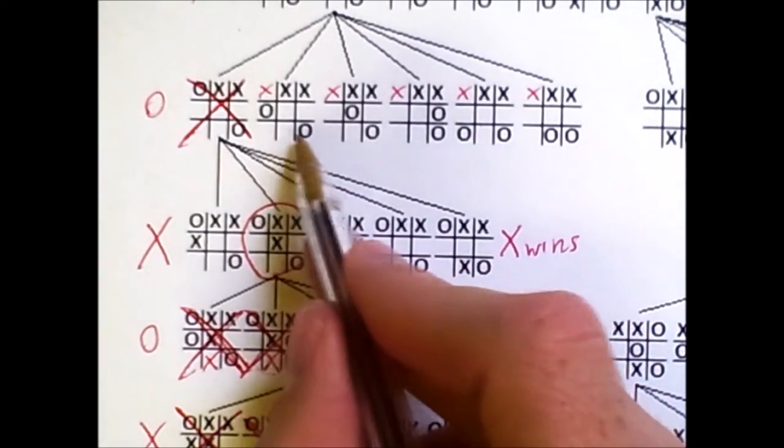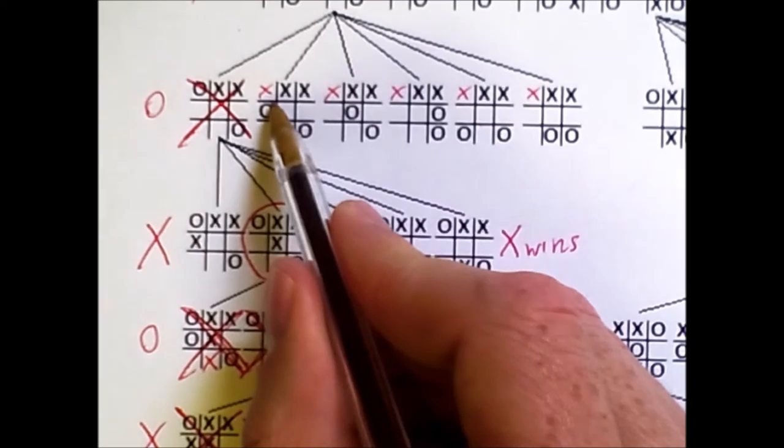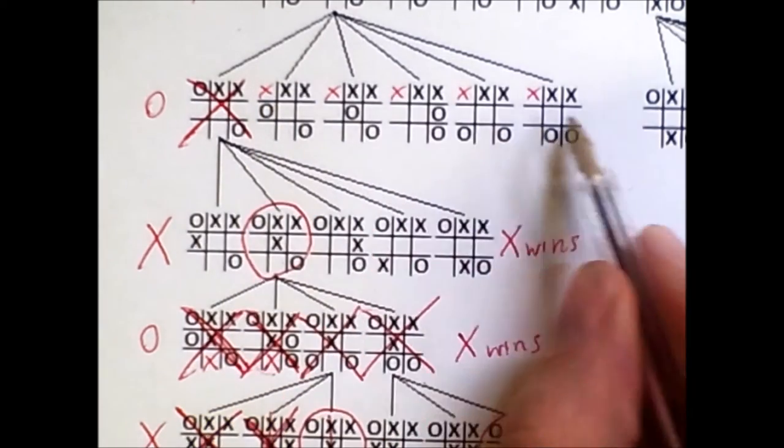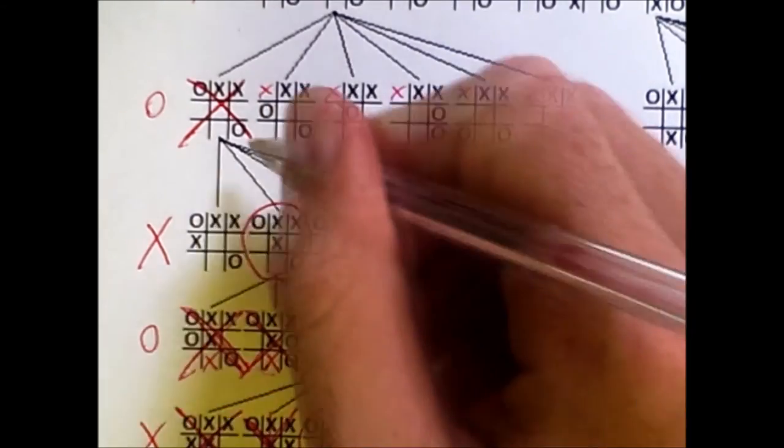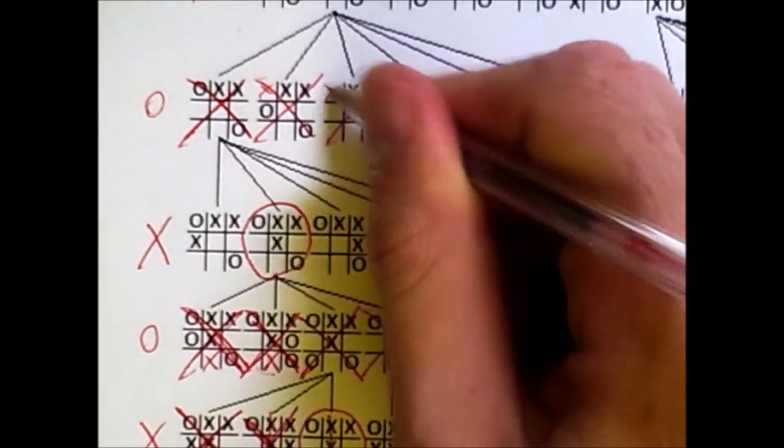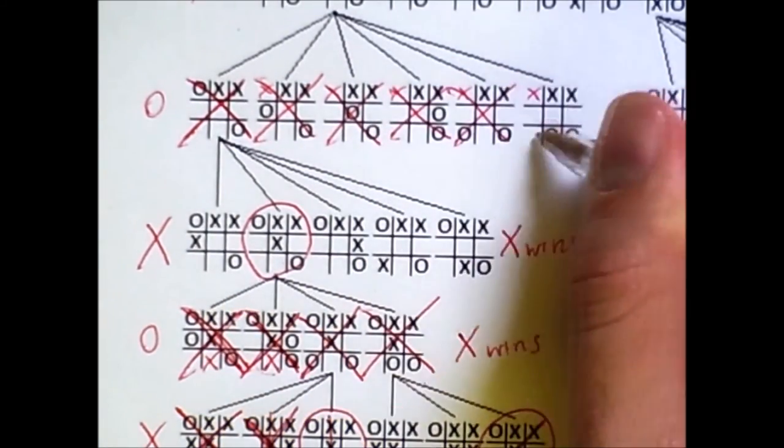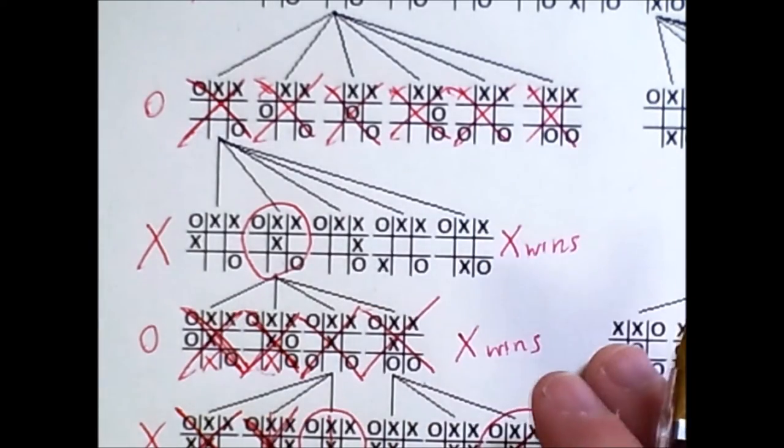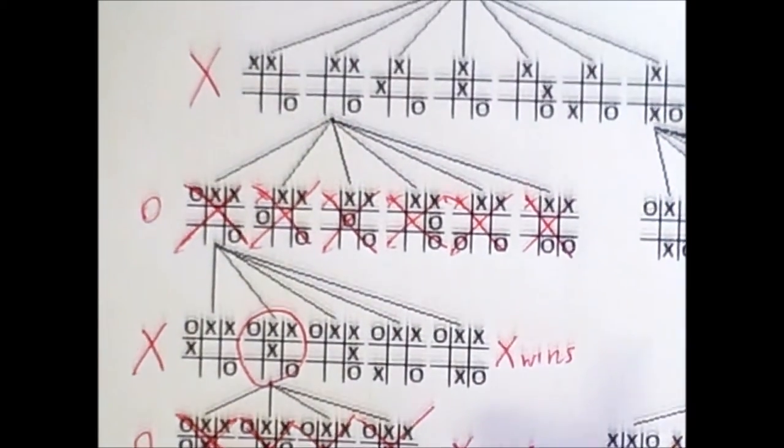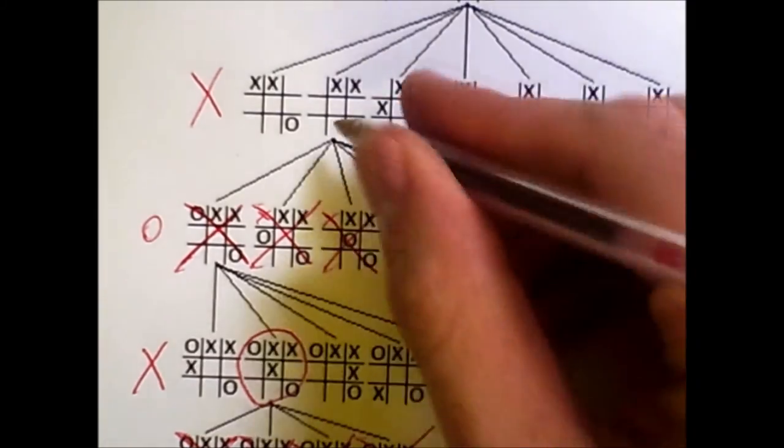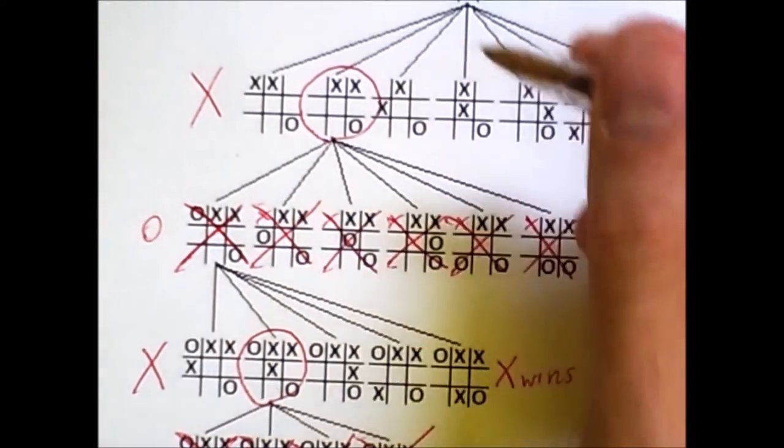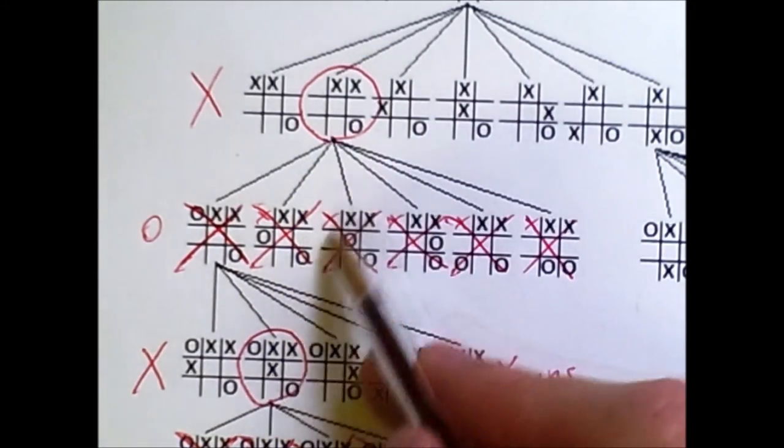O does not like that state because it leads to X's victory. And, as I demonstrated earlier, X is actually only one step away from winning in all of these other states. So, O actually doesn't like any of these states, which, once again, if we go up one level, means that X loves this state. X is guaranteed to win from there.